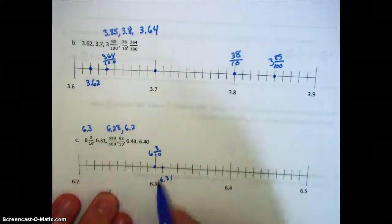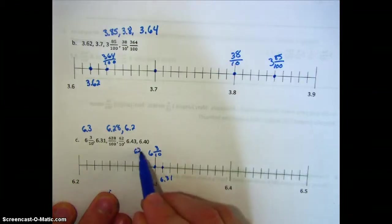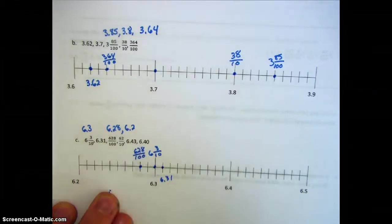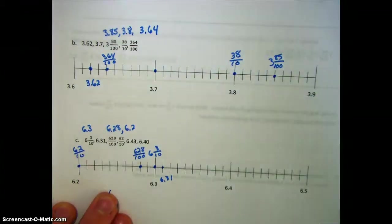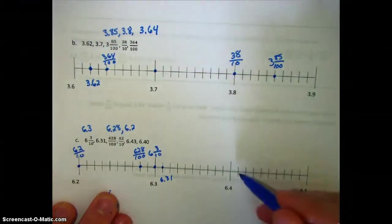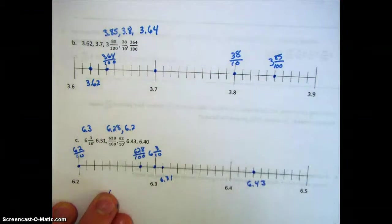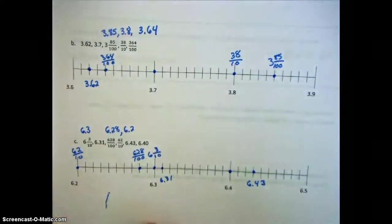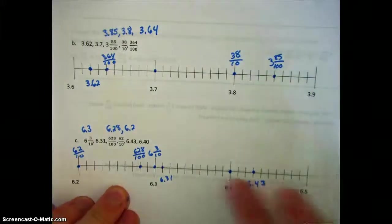Next is six and twenty-eight hundredths: go to six and two-tenths and count over eight hundredths. Then sixty-two-tenths, or six and two-tenths, which is already labeled. Next, six and forty-three hundredths: go to six and four-tenths and count over three hundredths. And finally, six and forty-hundredths, which is equivalent to six and four-tenths. That's how we plot on our number line — start with tenths, then count over the hundredths.